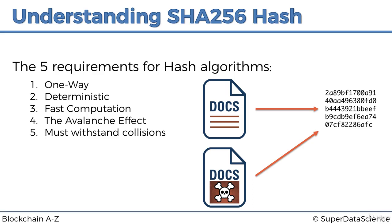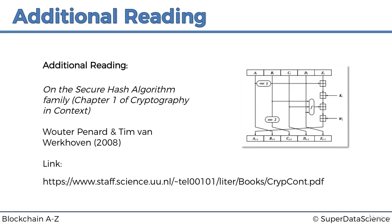So artificial collisions must not be possible. Those are the five requirements for secure hash algorithms: one-way, deterministic, fast computation, avalanche effect, and must withstand collisions. This is quite a lot to take in at the very start, but this is the foundation of everything we'll be discussing about blockchain, so it will be very useful going forward.